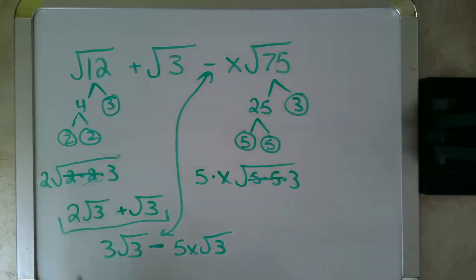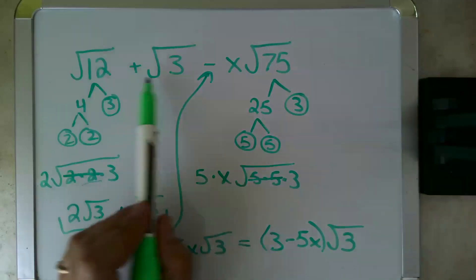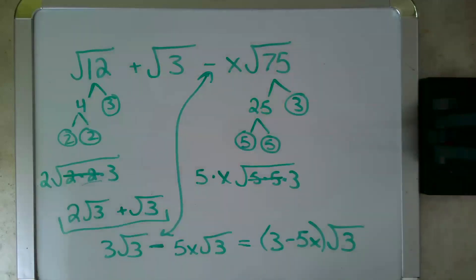And again, 3 cows minus 5x cows. Well, it's a little less obvious with this one, but you're subtracting your outsides and your inside is the quantity. So 3 minus 5x root 3s. And that is how you combine and simplify this original expression.